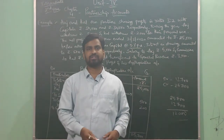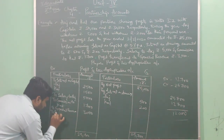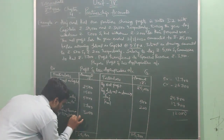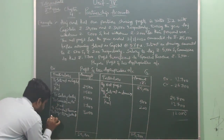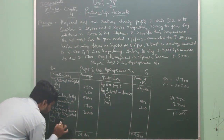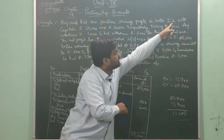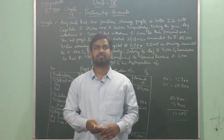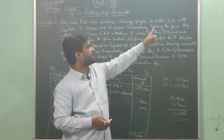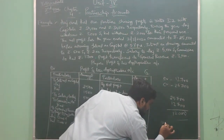The remaining profit will be recorded as 'To Profit Transferred to Partners' Accounts'. The profit is 12,000, which will be distributed in their profit sharing ratio of 3:2. Adding 3 and 2 gives 5 total shares. So 12,000 is divided into 5 shares — the value of each share is 12,000 ÷ 5 = 2,400.